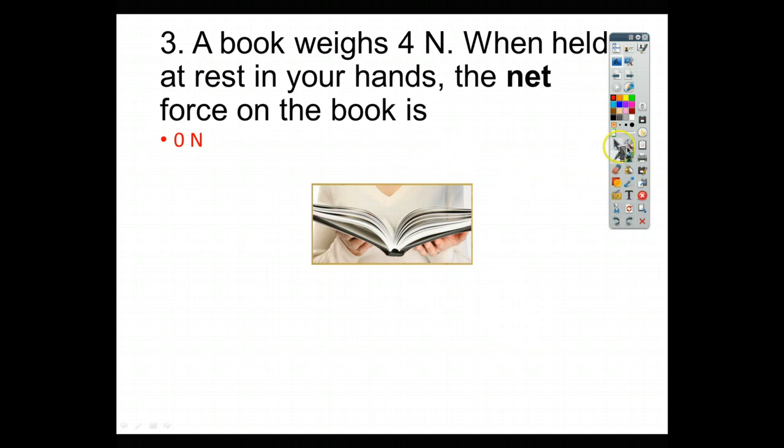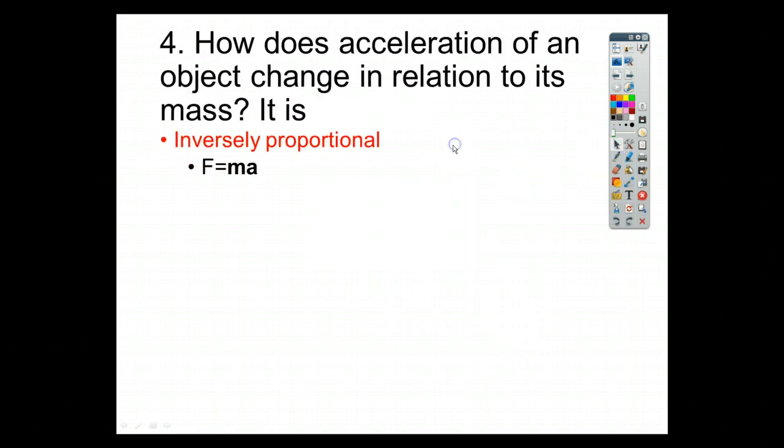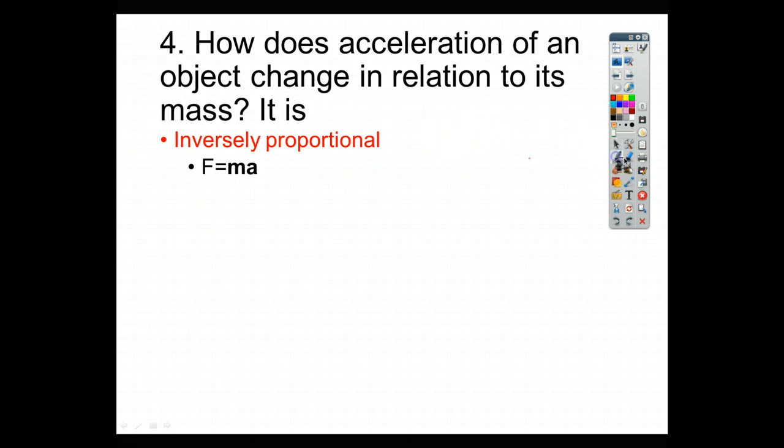For number 4, it says, how does an accelerational object change in relation to its mass? It is, and as we said earlier, they are inversely proportional because they are next to each other. And if mass goes up, acceleration has to go down in order to keep the same amount of force.